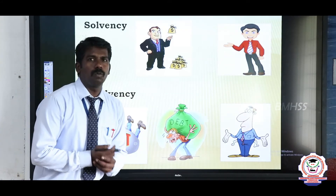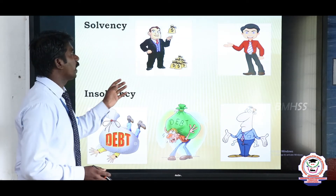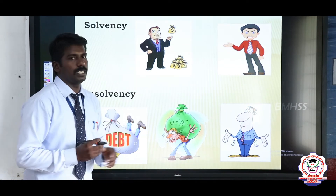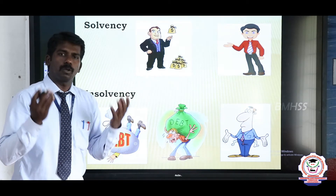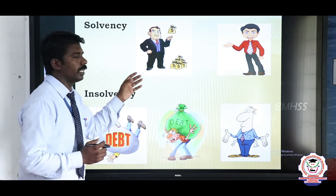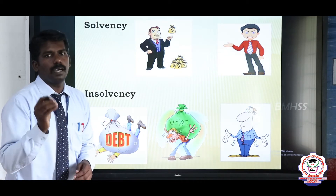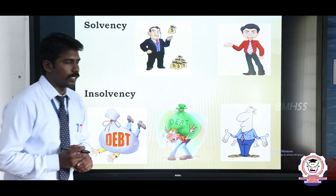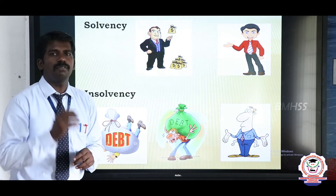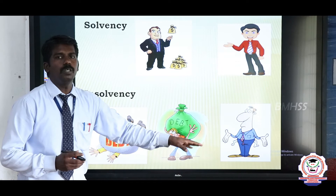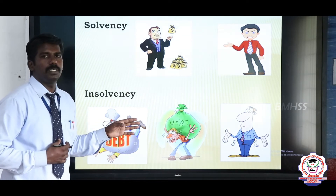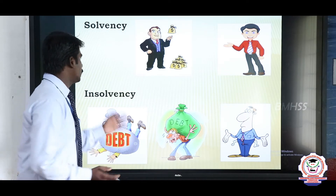Next, solvency. Solvency is the capability of a person to repay the debts which are borrowed from another person. If a person is solvent, he can borrow a large amount from other persons and repay it at the right time. Next, insolvency. Insolvency means a person borrowed money from others but after a particular time he cannot repay the amount to the creditor or supplier. That is called insolvency — he cannot solve the money problem.